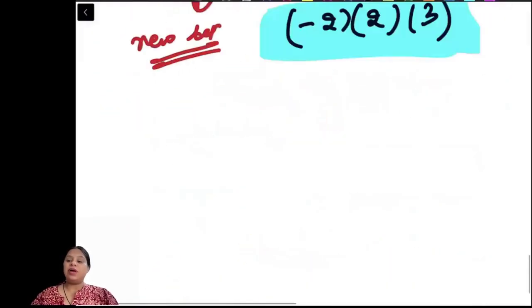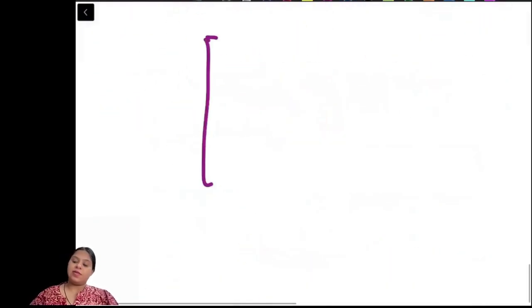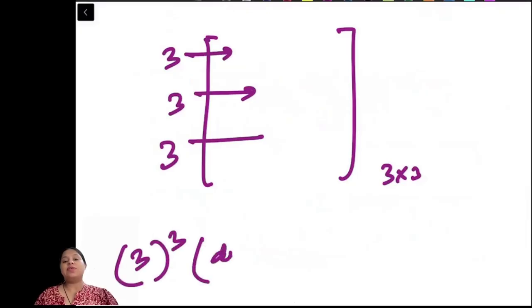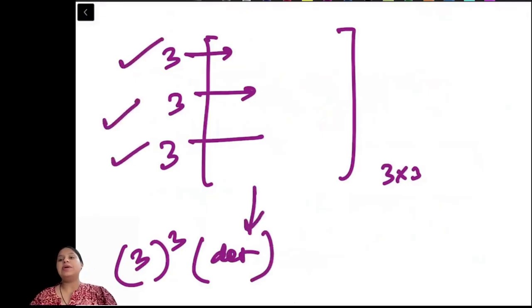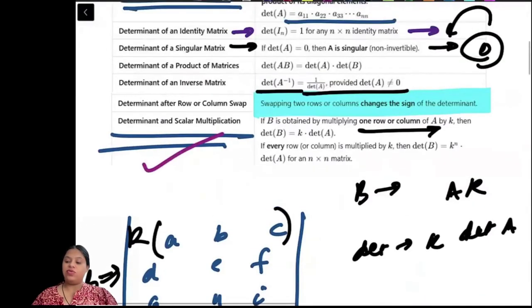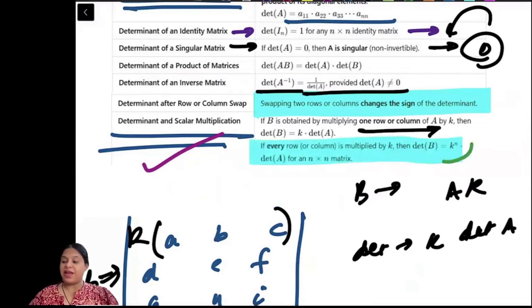For example, if I have a 3 by 3 matrix and each row is multiplied with 3, the determinant will be multiplied with 3 to the power 3. You get 3 times 3 times 3, times the original determinant. If every row is multiplied with K, the determinant of B will be K to the power n times determinant of A.